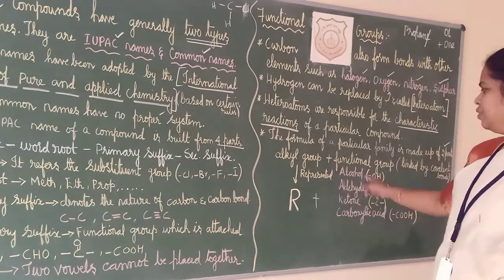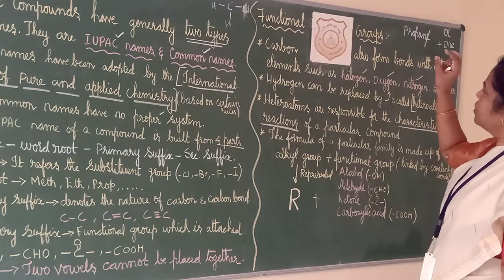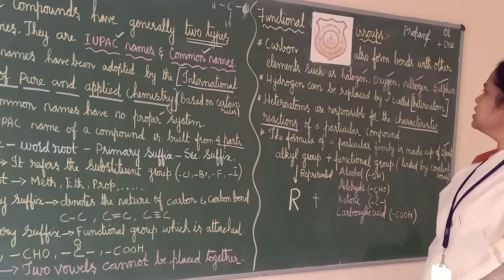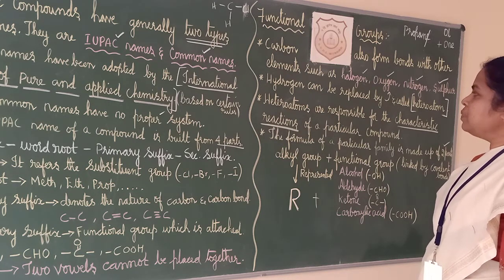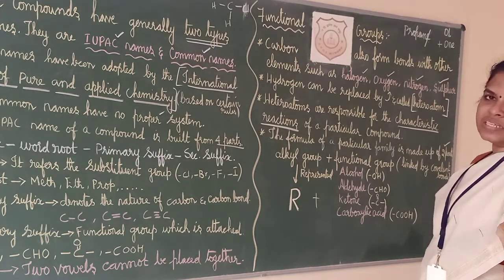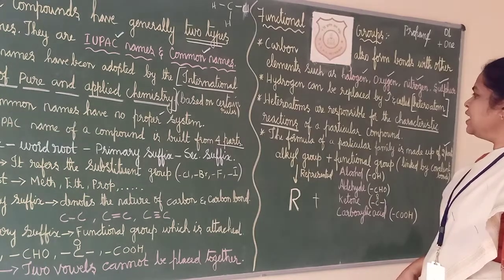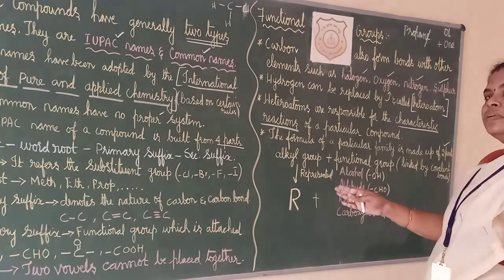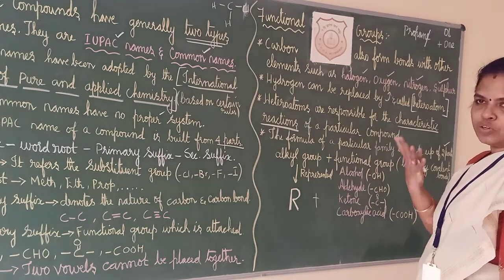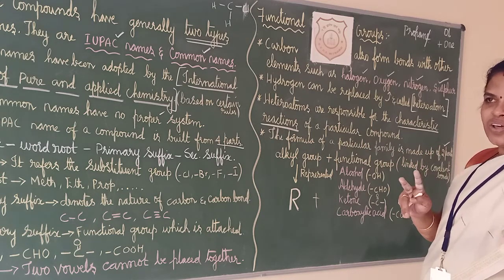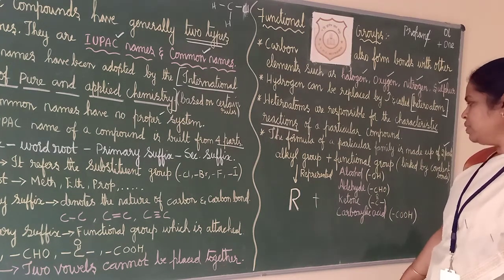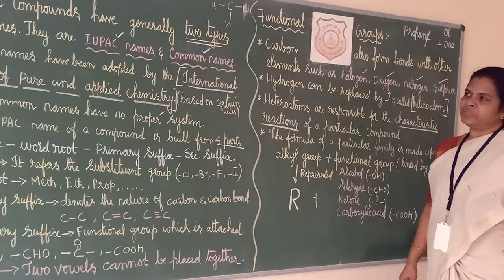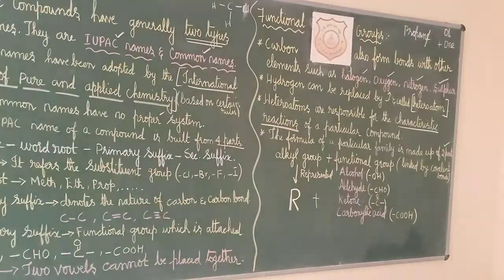So what is functional group? Hydrogen in carbon compounds is replaced by heteroatoms like halogen, oxygen, nitrogen, sulfur, and this gives the characteristic feature of the compound. The formula is alkyl group plus functional group. Four functional groups we are going to study: aldehyde, alcohol, ketone, and carboxylic acid. In the next class we will study alcohol and aldehyde, and in the following class ketone and carboxylic acid. Study properly and be ready for the next class. Thank you.